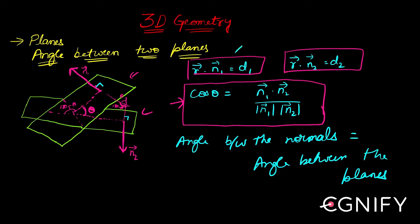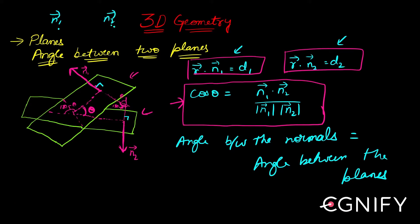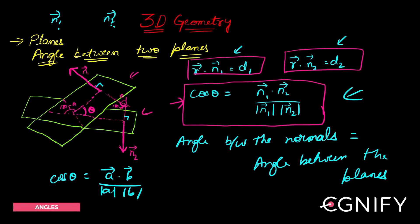It's very simple to find the angle between the two normals because normals are vectors. If you look at this equation, you can extract: n1 is a normal to the first plane, n2 is a normal to the second plane. These are two vectors. If I find the angle between them, that will be the angle between the planes. To find the angle between two vectors we use the dot product formula: cos θ = (n1·n2) / (|n1| |n2|).